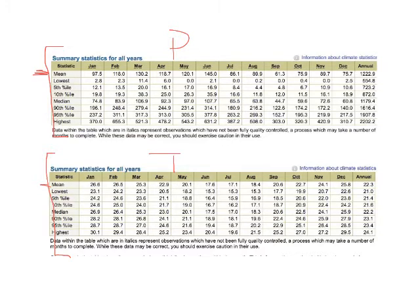For every month you've got an average. For rainfall, January shows 97.5 millimetres, February 118, March 130.2. For temperature, January's average is 26.6, then 26.5, 25.3, and so on. That mean data is the data you're going to use to create your climate graph.